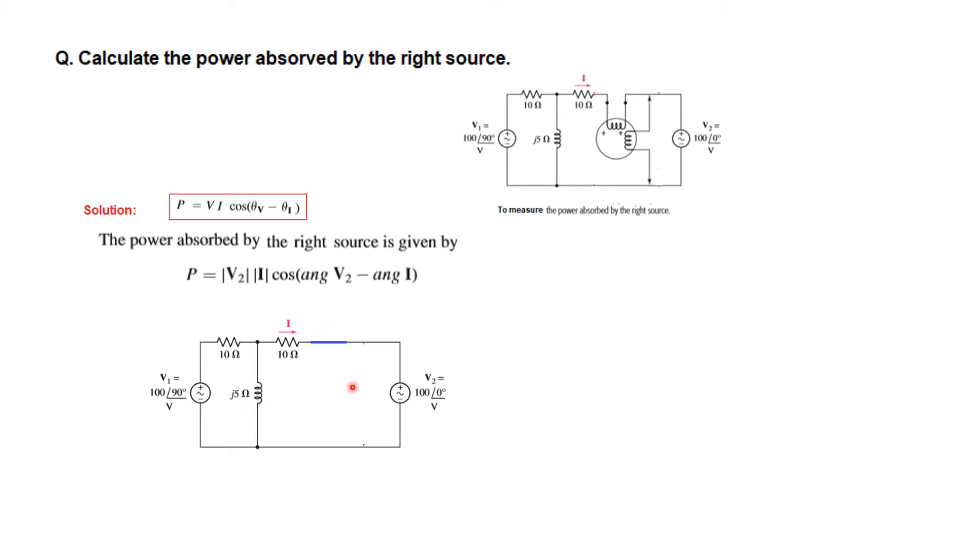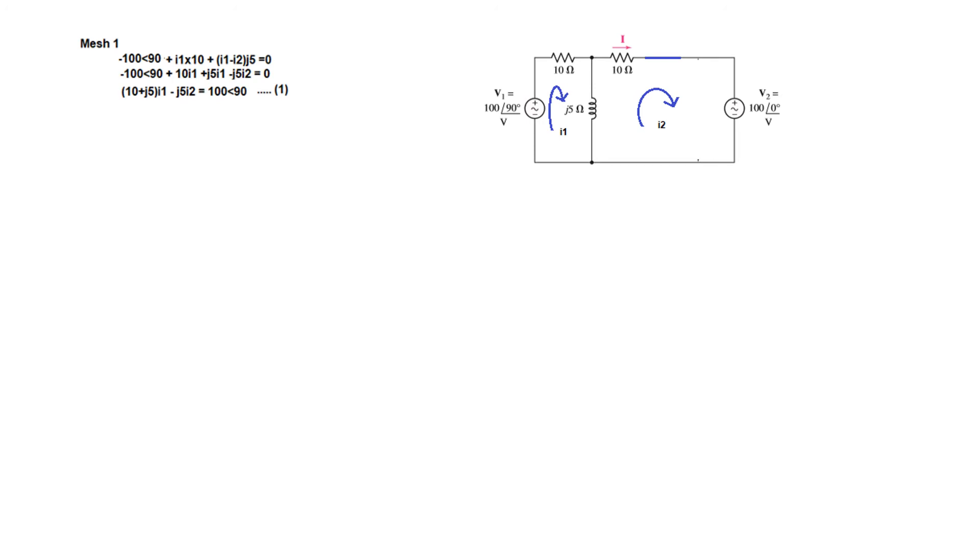Now this is a simple circuit where we can find the current I. The easiest way is to take two mesh currents: I1 current here and I2 current here. I2 is actually I. So we take mesh number one and write the equation.